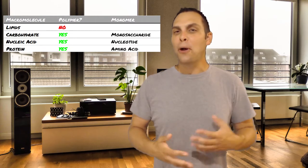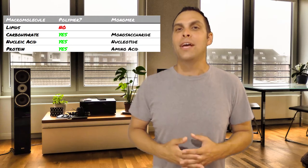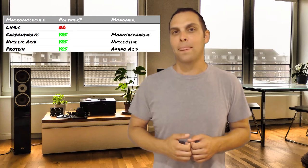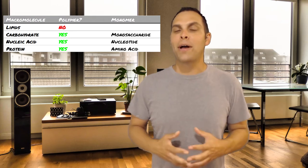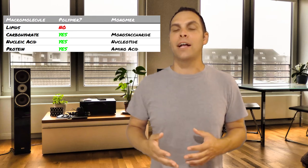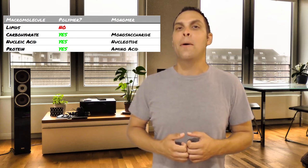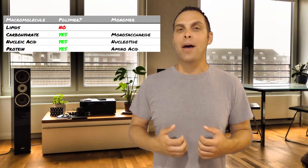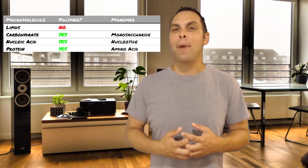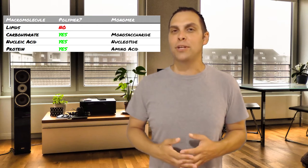So for example, carbohydrates. Carbohydrates are our fancy word in science for sugars. Now, large complex carbohydrates like polysaccharides, which are the polymers, consist of repeating subunits of something called monosaccharides. So the monomer for a carbohydrate is a monosaccharide, the most common of which is glucose.